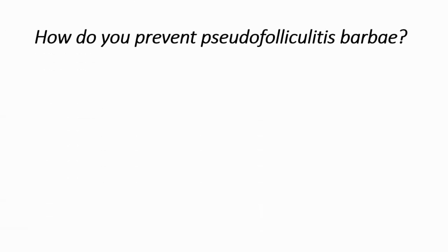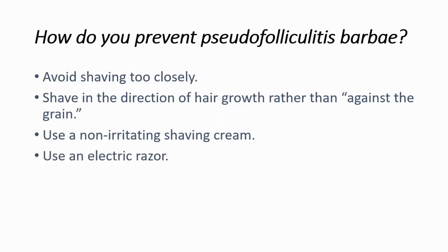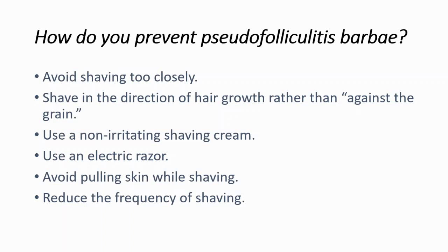How can you prevent this condition? First, you should avoid shaving too closely, and you should shave in the direction of hair growth rather than against the grain. You should use a non-irritating shaving cream, and you can use an electric razor. Avoid pulling skin while shaving, reduce the frequency of shaving, and replace your razor frequently.